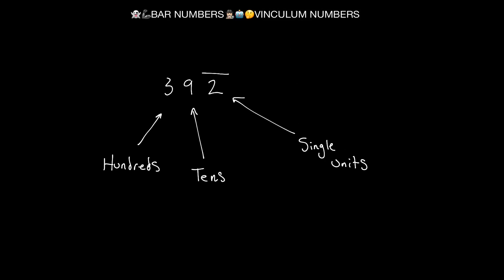Here's another way of representing this: we have the number 392, but the 2 has a bar over it. So the hundreds place is positive, the tens place is positive, and then the single units is going to be negative. This is saying positive 300 plus 90 minus 2. The single units place is negative.